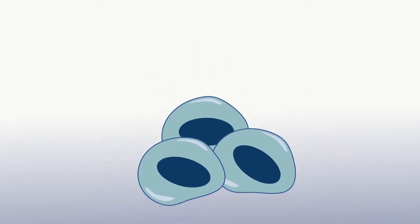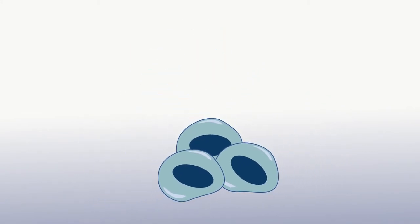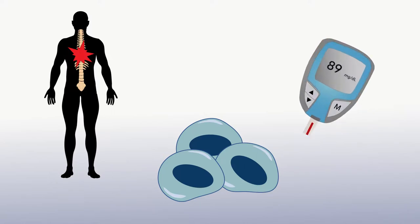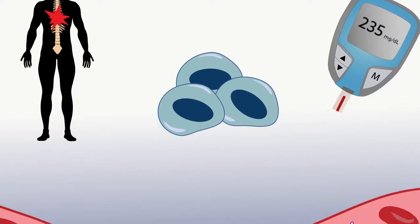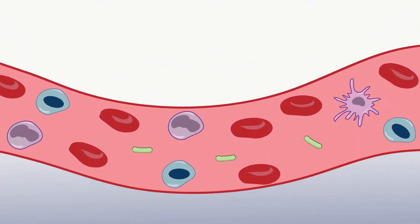Stem cells are usually thought of as possible treatments for diseases like spinal cord injuries or type 1 diabetes in which cells need to be replaced. But increasing evidence suggests they may be able to help with sepsis, a life-threatening complication of infection.